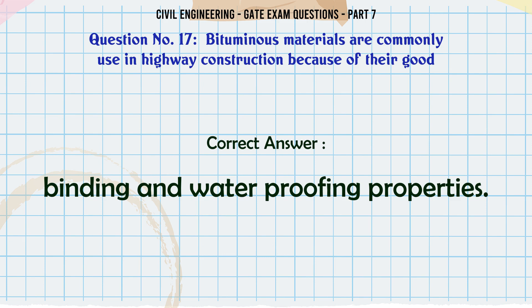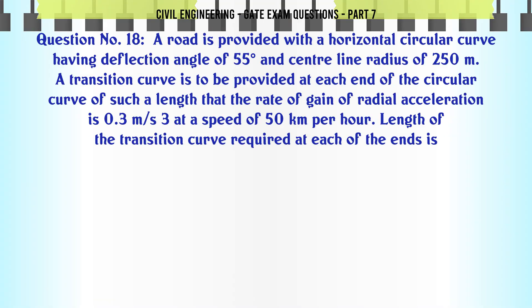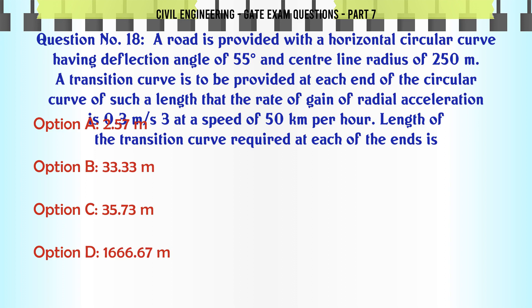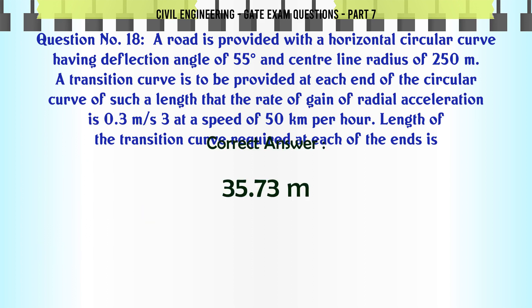A road is provided with a horizontal circular curve having a deflection angle of 55° and center line radius of 250 m. A transition curve is to be provided at each end of the circular curve such that the rate of gain of radial acceleration is 0.3 m/s3 at a speed of 50 km/h. The length of the transition curve required at each end is: A) 2.57 m, B) 33.33 m, C) 35.73 m, D) 1666.67 m. The correct answer is 35.73 m.